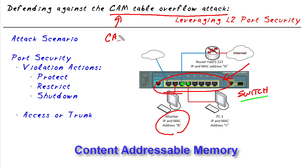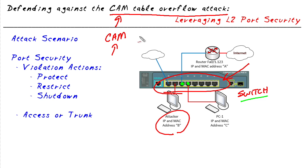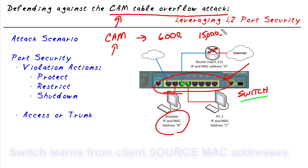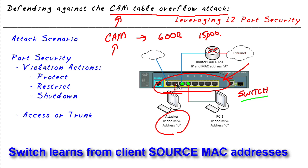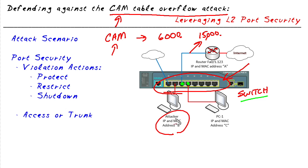The acronym CAM stands for Content Addressable Memory — that's where the switch stores all the layer 2 MAC addresses it learns. This attack exploits the fact that the CAM table is not unlimited; a switch may have a capacity of 6,000 or 15,000 MAC addresses. If the attacker floods the switch with enough MAC addresses to exceed that capacity, the switch can no longer remember legitimate entries like PC1's or the router's MAC address, and begins forwarding frames to every other port in the same VLAN — allowing the attacker to eavesdrop.